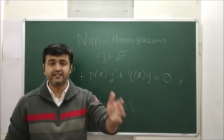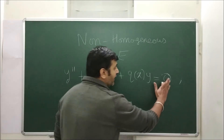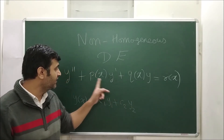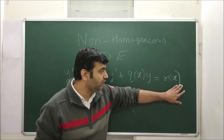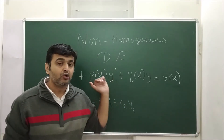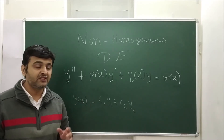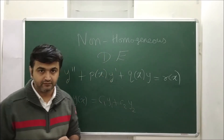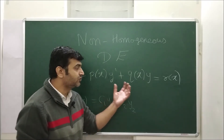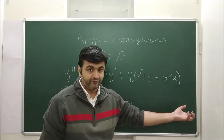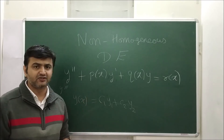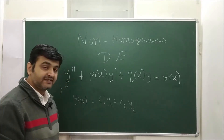Now the question is: if you have the right-hand side to be non-zero — that means a term involving only the independent variable x — then we call this a non-homogeneous linear differential equation. How will the general solution look like? The same question applies to a third order case: y''' + p(x)y'' + q(x)y' + h(x)y = r(x), and similarly for fourth order and beyond.